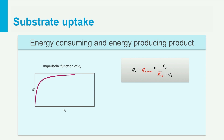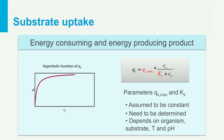For both product classes, substrate is taken up by a transporter following a hyperbolic function in Cs, as discussed in the previous unit. This function has two parameters, Qsmax and Ks, and both parameters are assumed to be constant for a given organism-substrate combination, also at a defined temperature and pH. Whether working with an energy-consuming or energy-producing product, both follow the same hyperbolic kinetic format for substrate uptake.